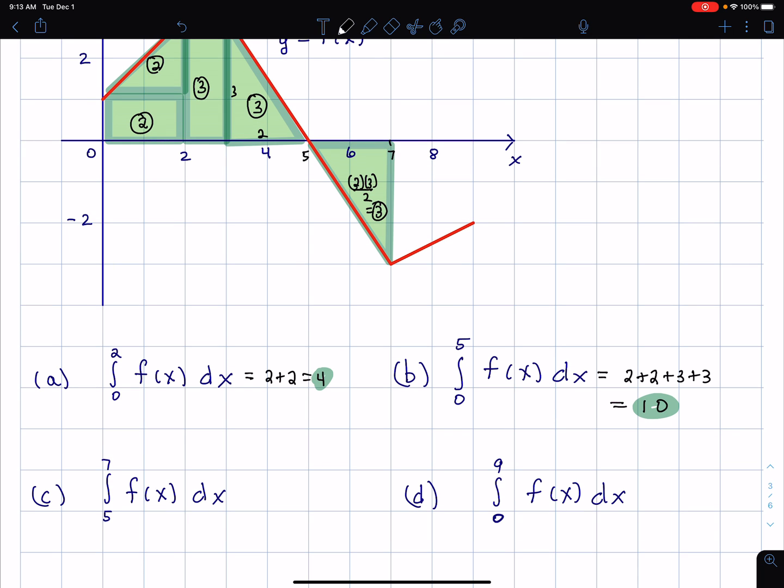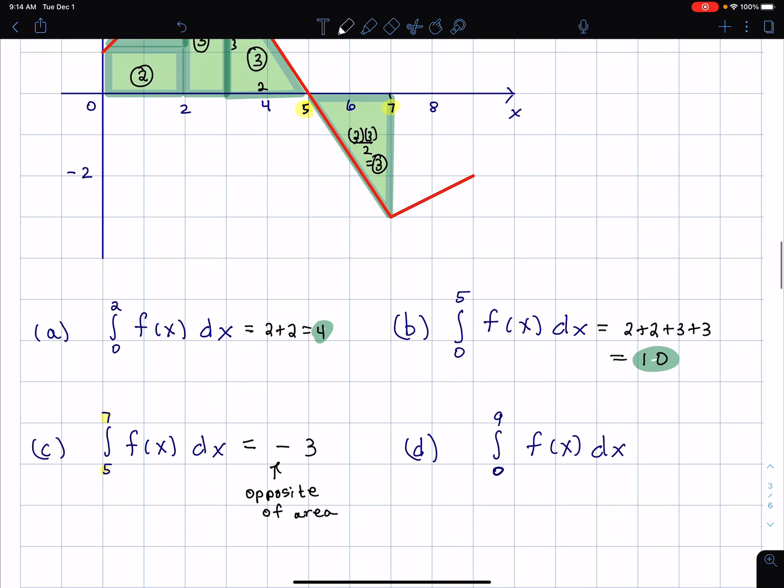We're starting at 5, going to 7. What do we get? It's not equal to the area—it's equal to the negative area, the opposite of the area. Why? Because it lies below the curve. So f is negative from x equals 5 to x equals 7, and we get negative 3.